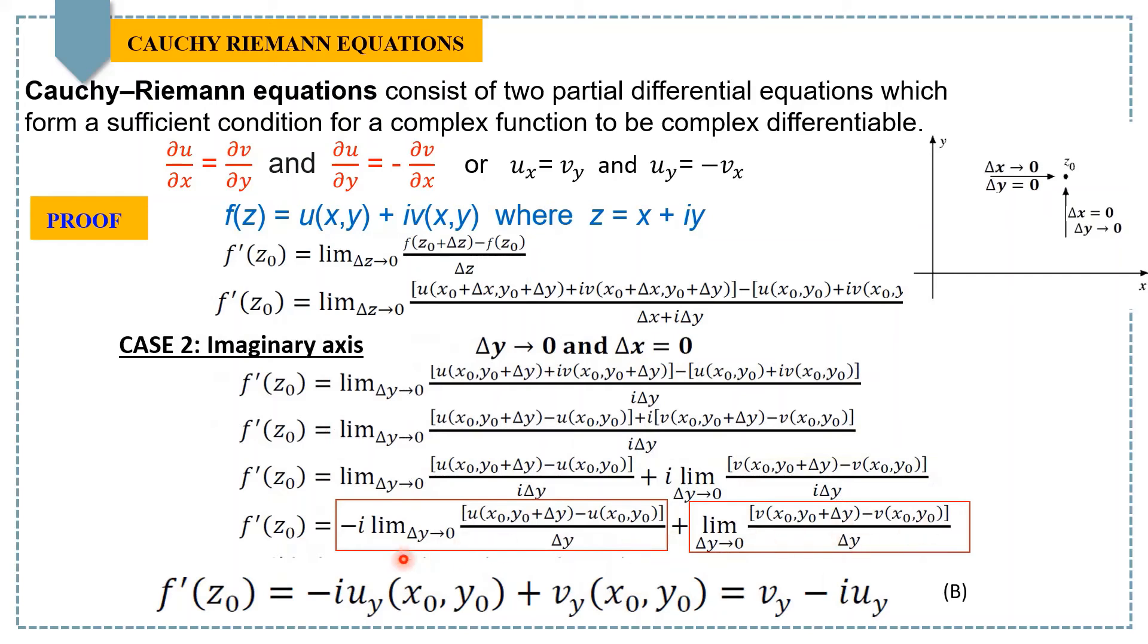here you can see we have the imaginary part for the function and the real part for the function. Now, again, we can identify this partial derivative with respect to y, and this is also a partial derivative with respect to y. So, this is nothing but -iuᵧ and this is vᵧ, which simply can be written as f'(z₀) = vᵧ - iuᵧ. Let's call this equation B.